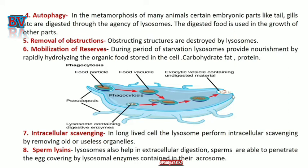Next is autophagy: in the metamorphosis of many animals, certain embryonic parts like the tail and gills are digested through the agency of lysosomes, and the digested food is used in the growth of other parts.